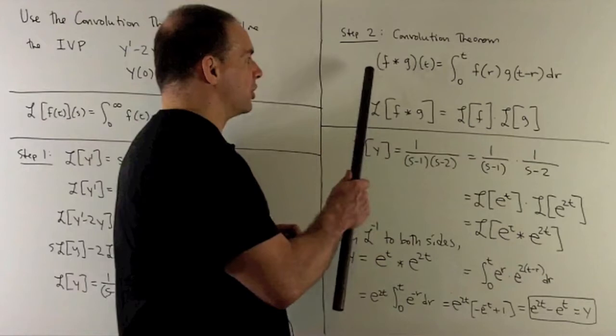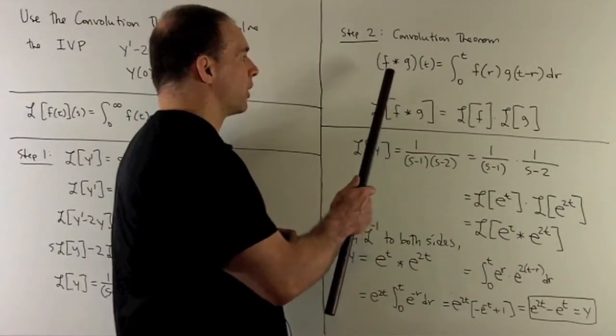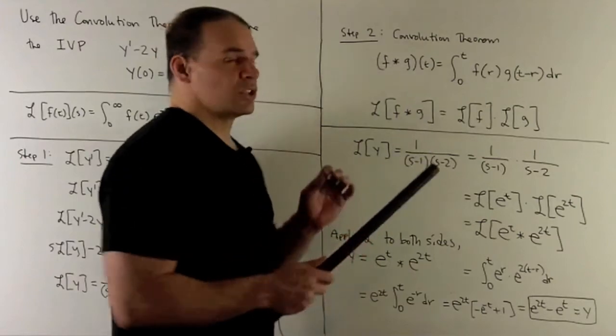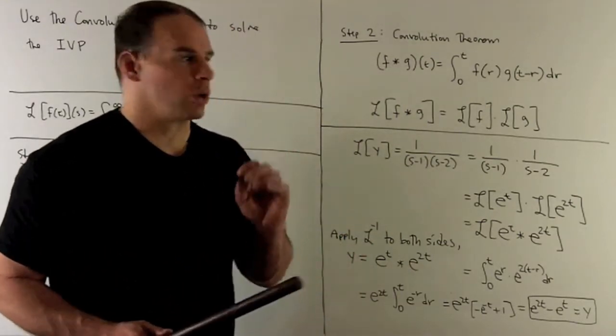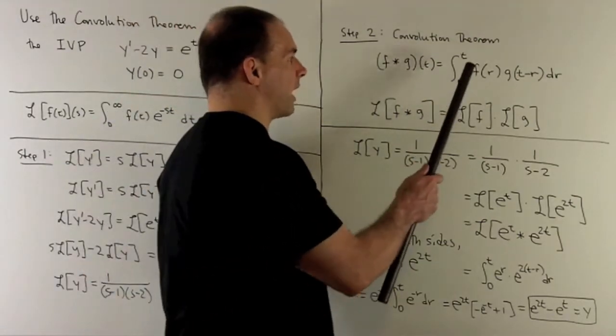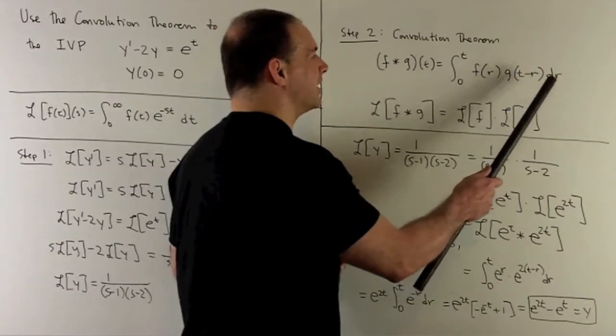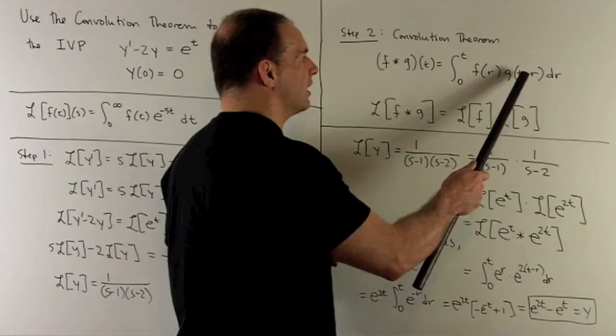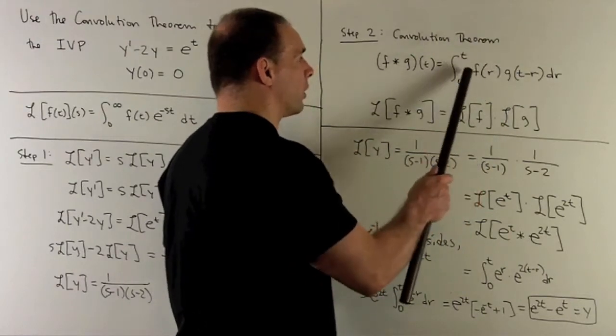First, we have our definition of convolution. We're going to have f convolved with g, evaluated at t. It's going to be equal to the integral from 0 to t of f of r g of t minus r dr. Note, t is being treated as a constant here, and it's also in one of our limits.